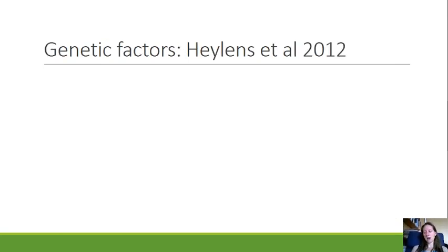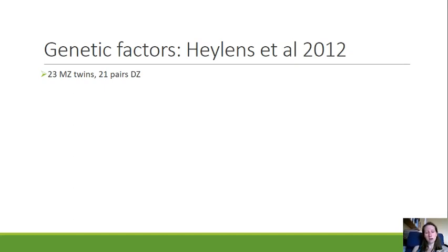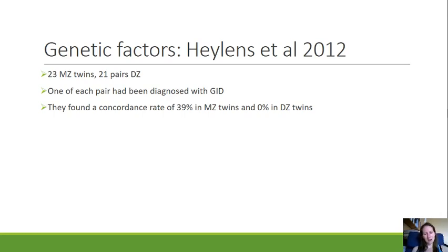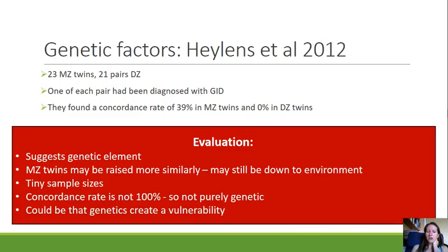The second biological explanation is whether there is a genetic component to gender identity disorder. Hälens et al. conducted a twin study looking at 23 identical twin pairs and 21 non-identical twin pairs, with one of each pair diagnosed with GID. They looked for a higher concordance rate in identical twins compared to non-identical twins. They found a concordance rate of 39% for identical twins and 0% for non-identical twins — remember, concordance rate means both twins have the condition.